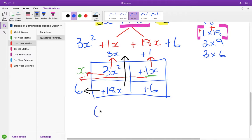So we write down from across the top, 3x plus 1, and from down the side, x plus 6.